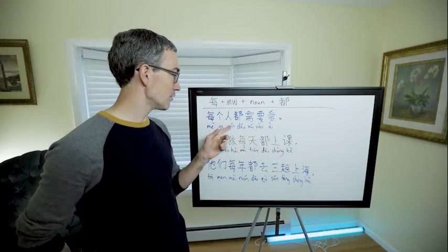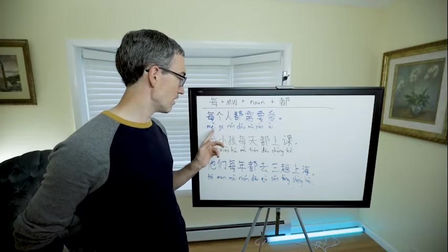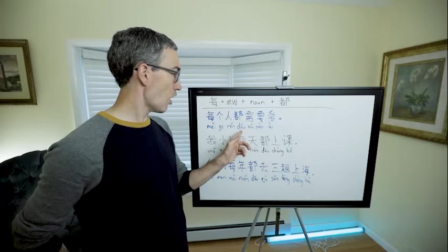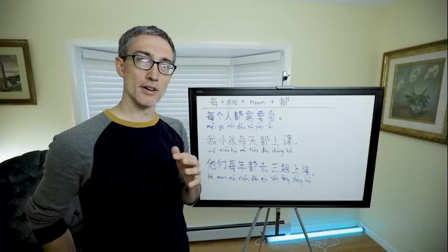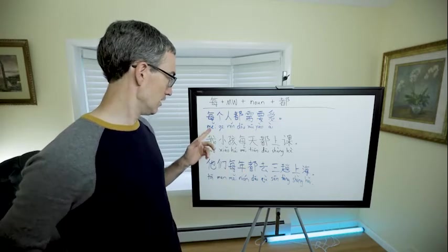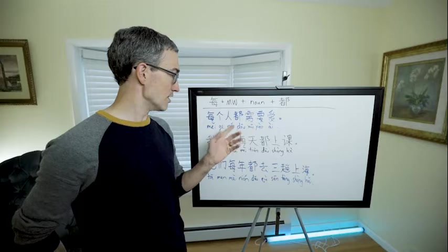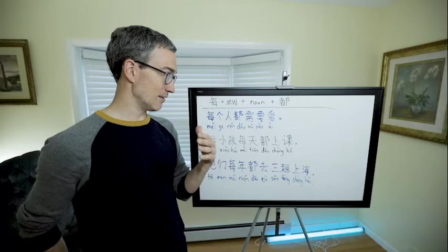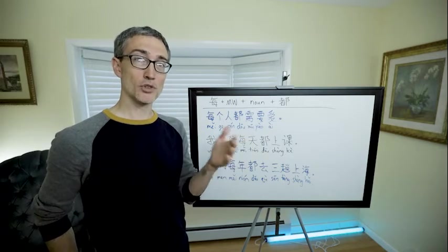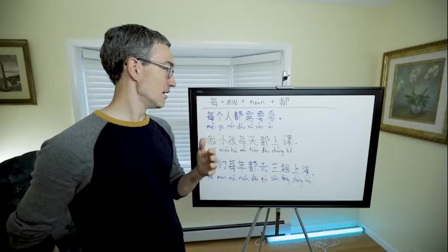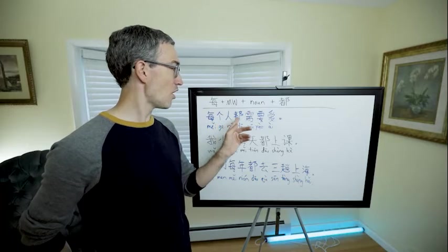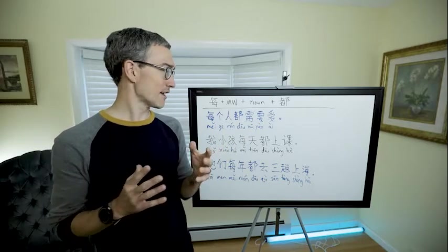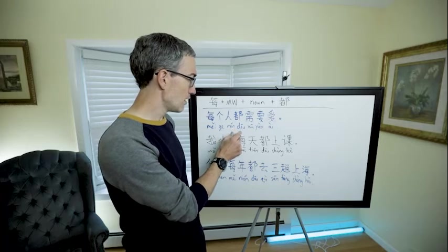In English that would sound very awkward. Let me show you why. 每个人都需要爱 (měi ge rén dōu xūyào ài) - 每个人, what do you think that means? Each person or every person, all people, 每个人. You wouldn't say that. You might say, excuse me, all people need love. You can say every person needs love, but you don't say every person all needs love.